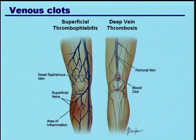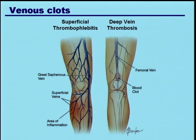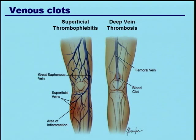A superficial thrombophlebitis means a clot and inflammation — 'itis' means inflammation. It's a clot or occlusion of a vein with an inflammatory reaction around it in one of the superficial veins. This shows the typical pattern of superficial veins in the lower extremity. These veins are superficial because they're on top of all the muscles, lying just underneath the skin in the fatty connective tissue.